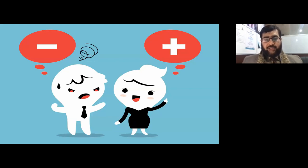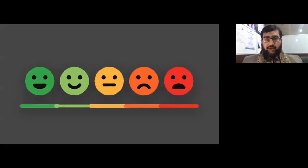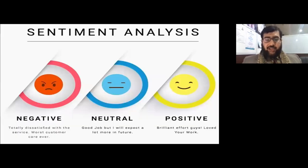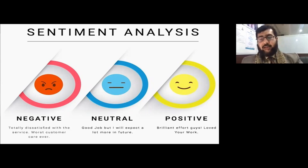There are two signals — one is positive, one is negative — and there are also values between these two extremes. Sometimes people are not too strongly positive, sometimes not too strongly negative. There are different values between the extreme ends, but normally in sentiment analysis we categorize responses into three major categories: negative, positive, and neutral in between.